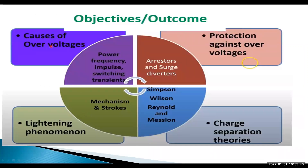Causes of overvoltages: overvoltages are caused by power frequency impulse, switching, and transient operations. These overvoltages are generated in electrical equipment. That's why we have to concentrate on the causes of overvoltage. Protection against overvoltage, such as surge arrestors and surge diverters, is also one of the important concepts.